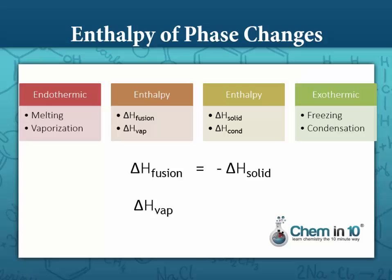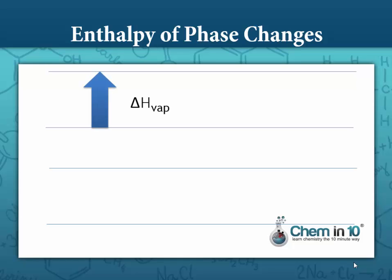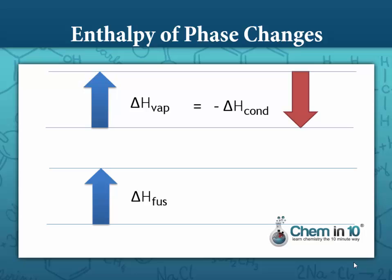Similarly, the enthalpy of vaporization is equal to the negative enthalpy of condensation — they are opposites. The amount of heat required to vaporize something is equal to the amount of heat required to be removed to condense it. The amount of energy required to melt ice is going to be equal to the amount of energy needed to be removed to solidify water.